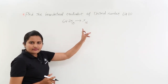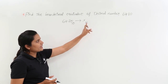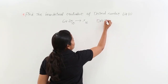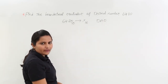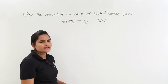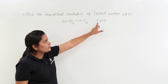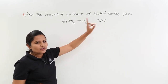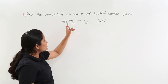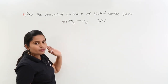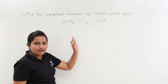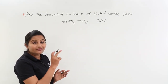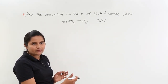This conversion comes under decimal to any other number system conversion — that may be binary, octal, or hexadecimal. You need to keep in mind the shortcut D.A.O.: decimal to any other. D represents division. For point-before digits, you need to perform division. For point-after digits — the fractional digits — you need to perform multiplication with respect to the destination number system.